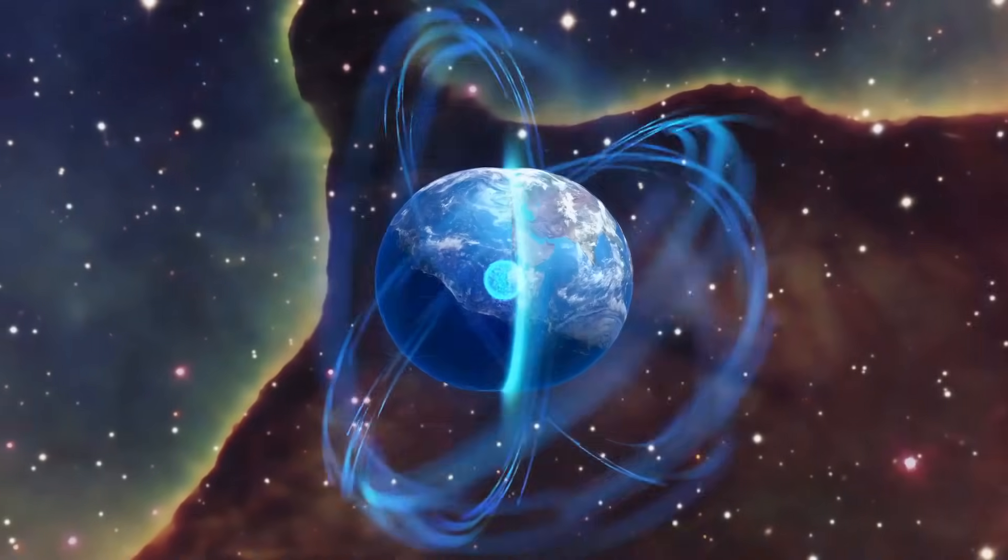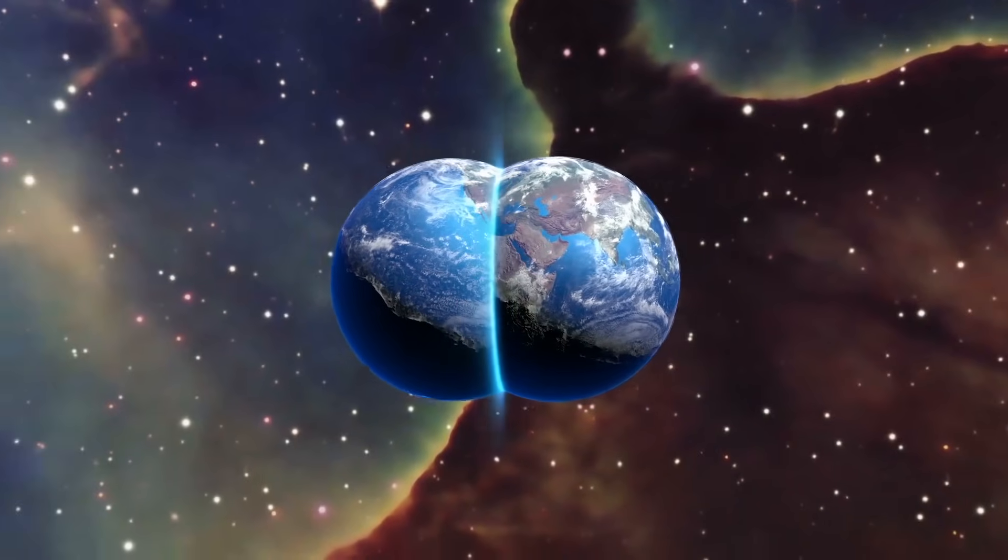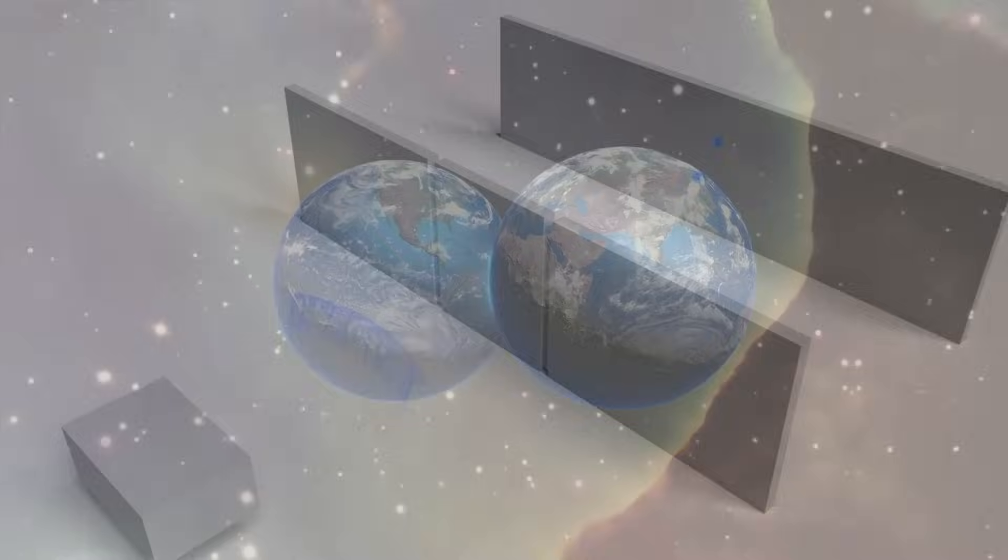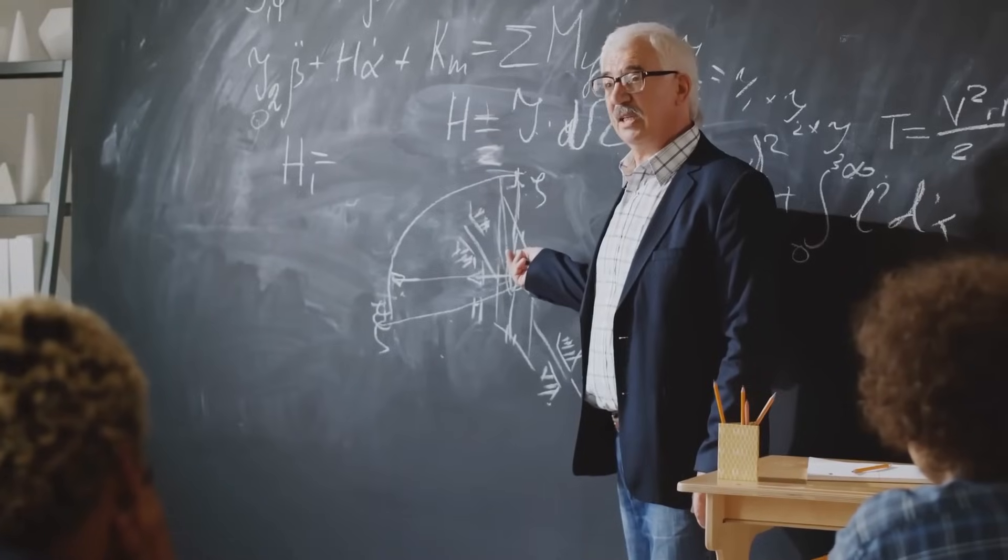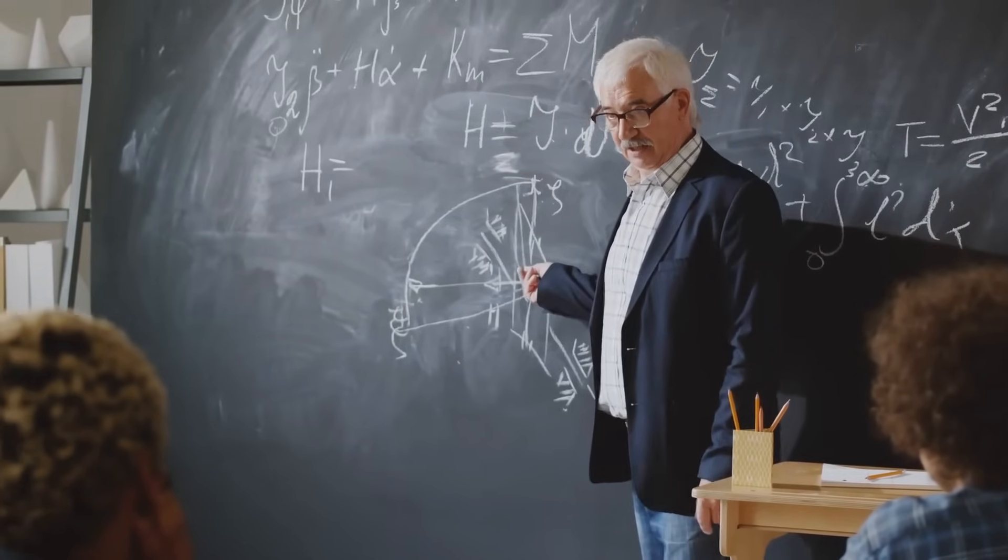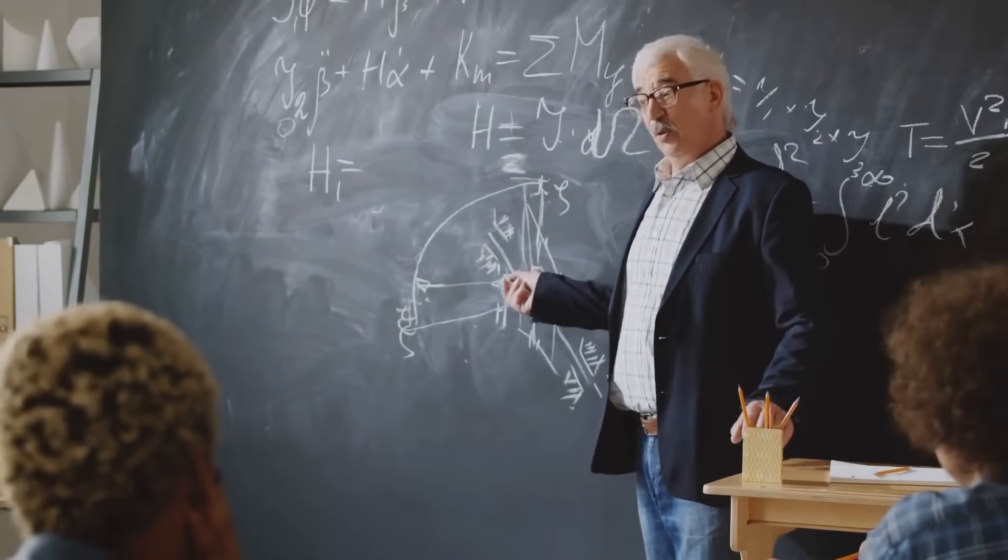Some see a multiverse where all possibilities exist. For others, quantum mechanics sets the ultimate limit of how much we can really know about reality. If you hear an expert insist that they know what it means, be cautious. In this video, I'll tell you why it's so hard to be sure of the answer, but also what we can say for sure about it. That's coming up right now.